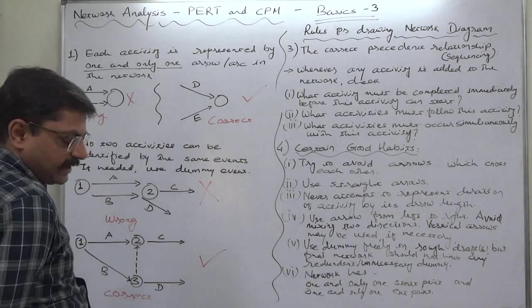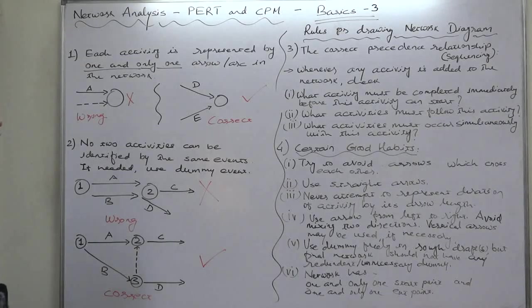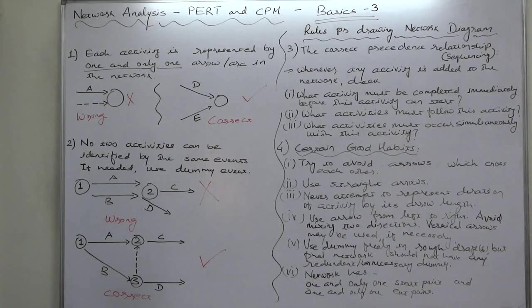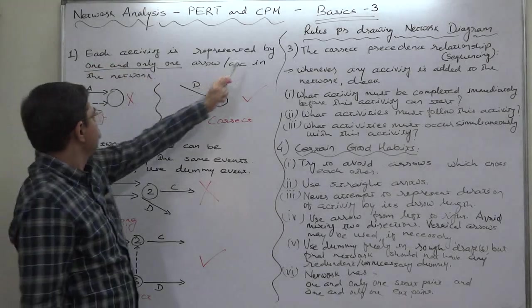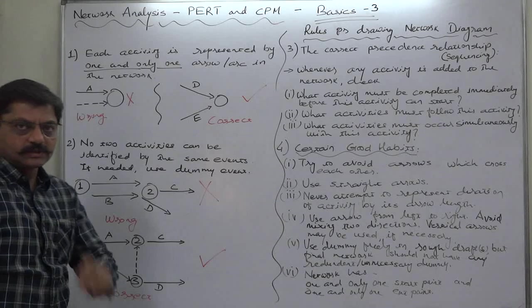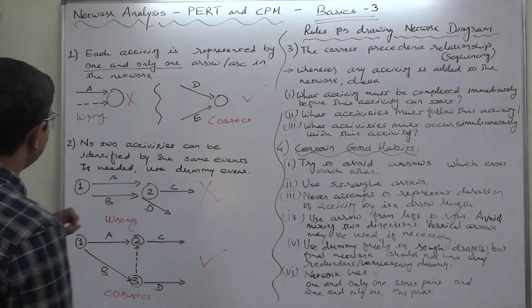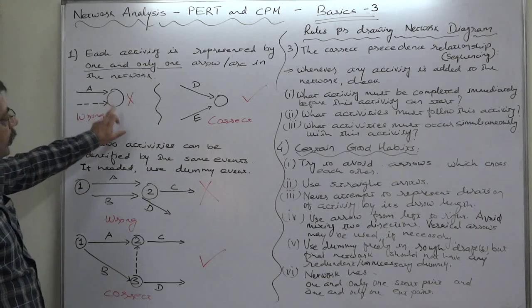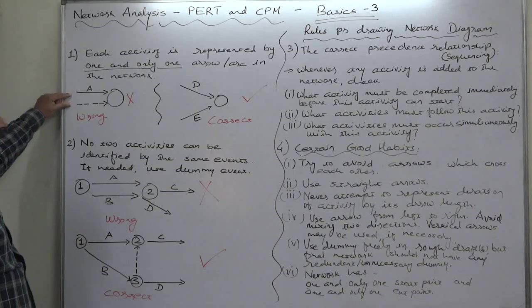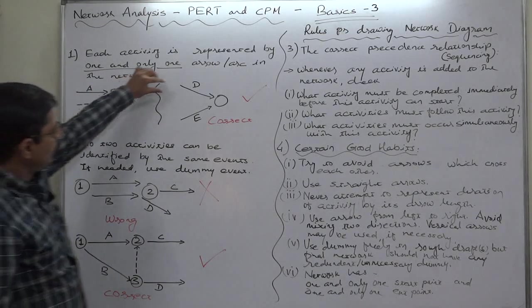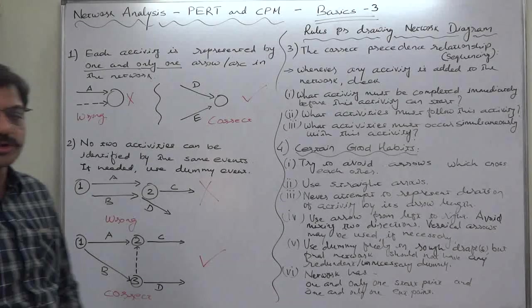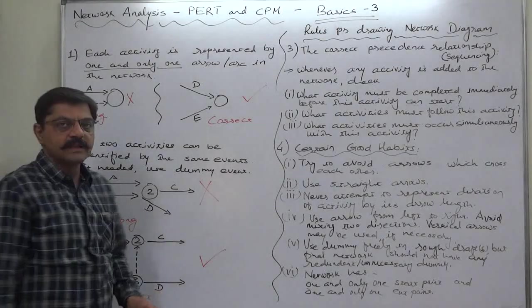We are discussing some basic points and now we have some rules for drawing network diagrams. The first rule or suggestion is each activity is represented by one and only one arrow in the network. One activity should be shown or represented by only one arrow. We cannot show a single activity by two arrows. This is wrong. Only one arrow for one activity.